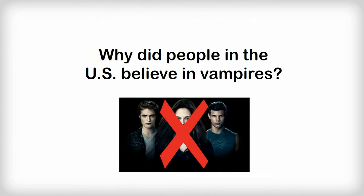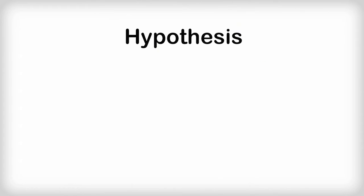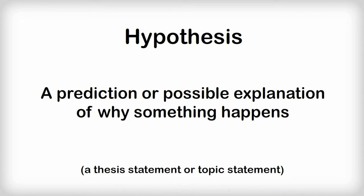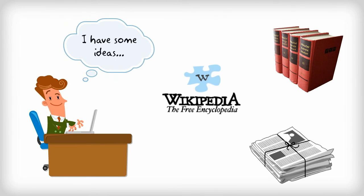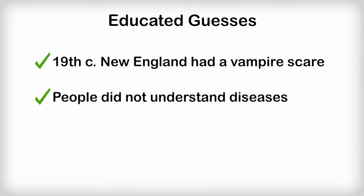And we're not talking about Edward and Bella, but when they really believed in them back in the 1800s. Once you have your research question, the next step is to develop a hypothesis. A hypothesis is a prediction or possible explanation of why something happens. It can also be called a thesis statement or topic statement. Use what you learned while doing background research to come up with an educated guess as to what the answer to your research question could be. Maybe people believed in vampires because New England had a vampire scare in the 19th century, or because people didn't understand certain diseases then.